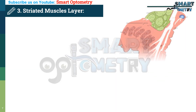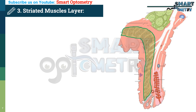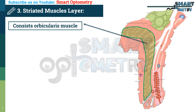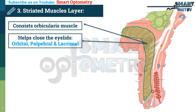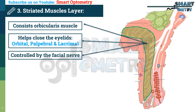Layer 3 – The Striated Muscle Layer. The third layer is the striated muscle, which consists mainly of the orbicularis muscle — a complete oval around the eyelids. This muscle helps close the eyelids and is divided into three parts: the orbital, palpebral, and lacrimal portions. It is controlled by the zygomatic branch of the facial nerve.